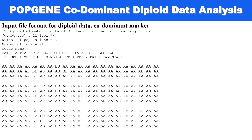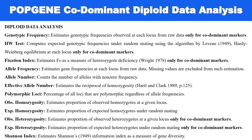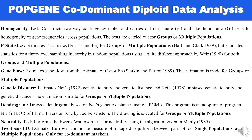There are 21 locus names, and for each population you need to keep an empty line or population name. For diploid data analysis we use different analysis parameters: genotype frequency, Hardy-Weinberg equilibrium test, fixation index, allelic frequency, allele number, effective allele number, polymorphic loci, observed homozygosity, expected homozygosity, observed heterozygosity, expected heterozygosity, Shannon index, homozygosity test, F-statistics, gene flow, genetic distance, dendrogram, neutrality test, two-locus LD, and multi-population analysis.